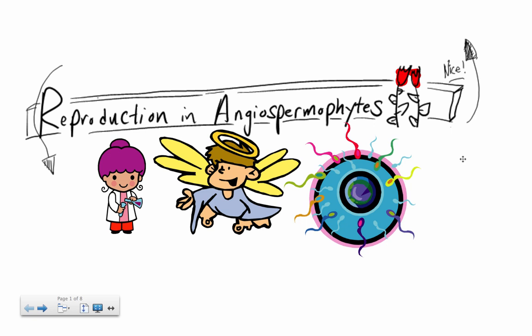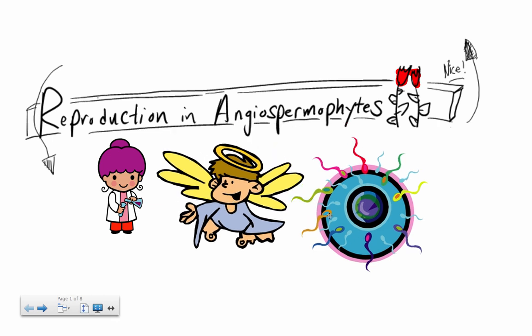Now we're going to be looking at reproduction in angiospermophytes. If you remember your plants, there are different types: coniferophytes, bryophytes, philocenophytes, and angiospermophytes. I like to think of angiospermophytes as 'angel sperm' - only angel sperm could produce beautiful flowers. That's why angiospermophytes are called flowering plants.